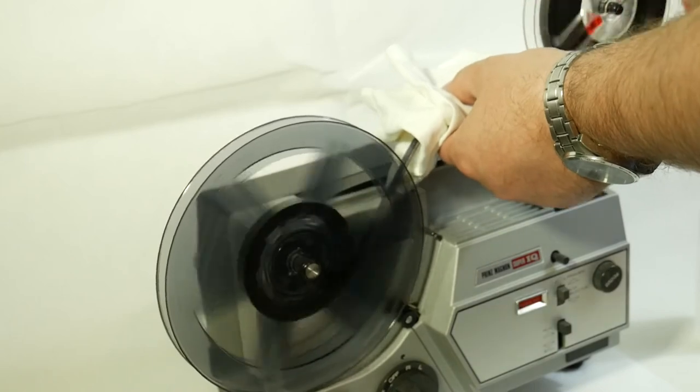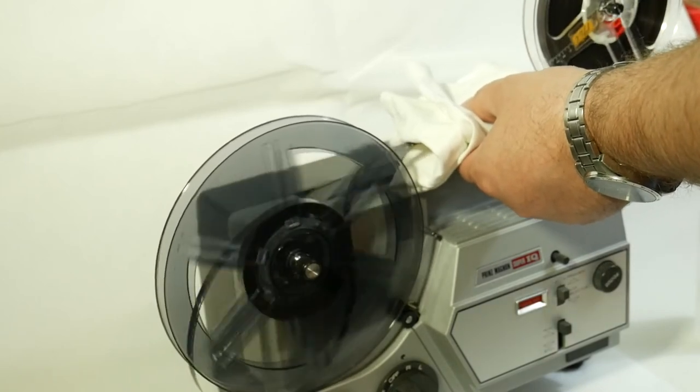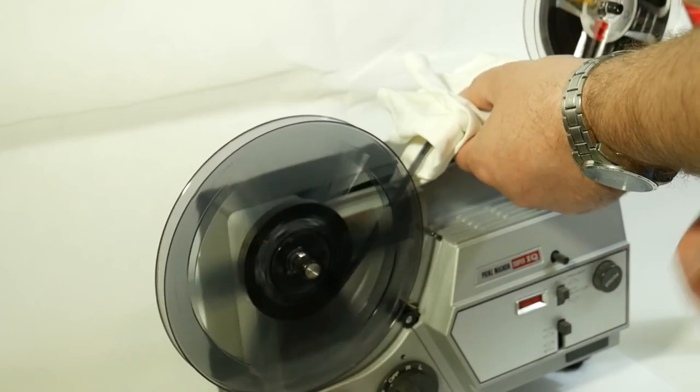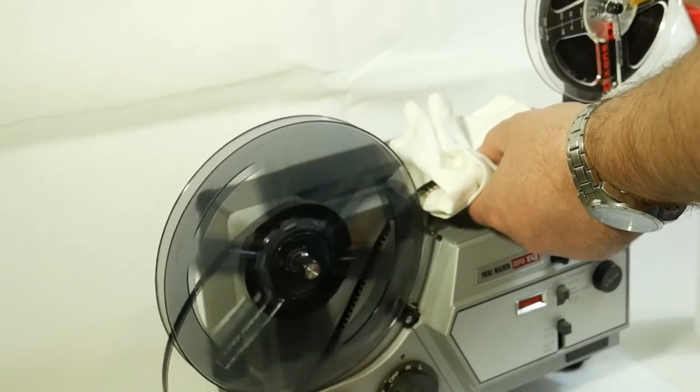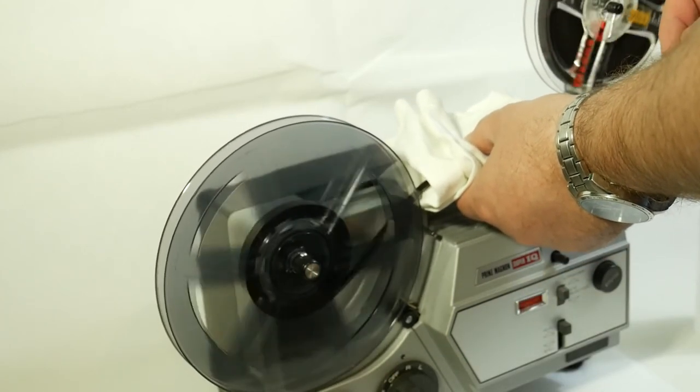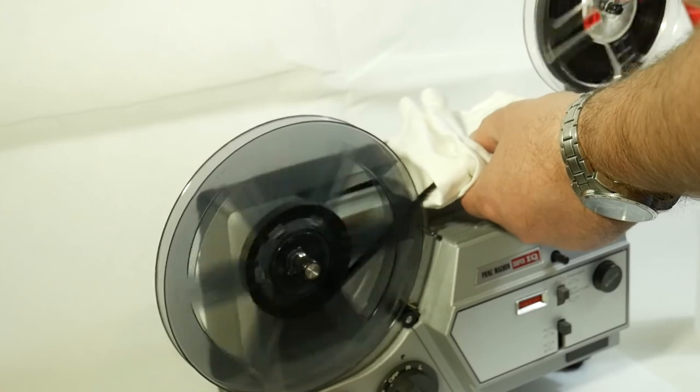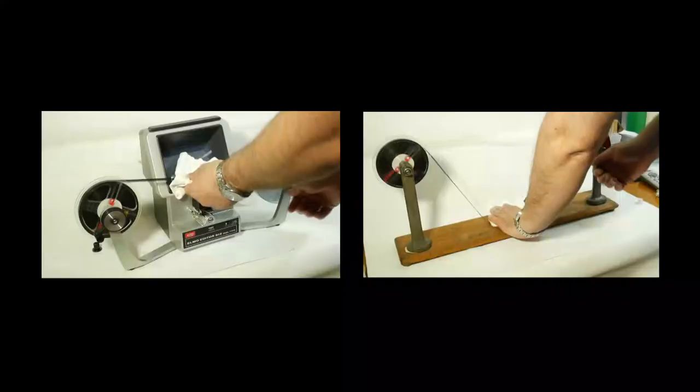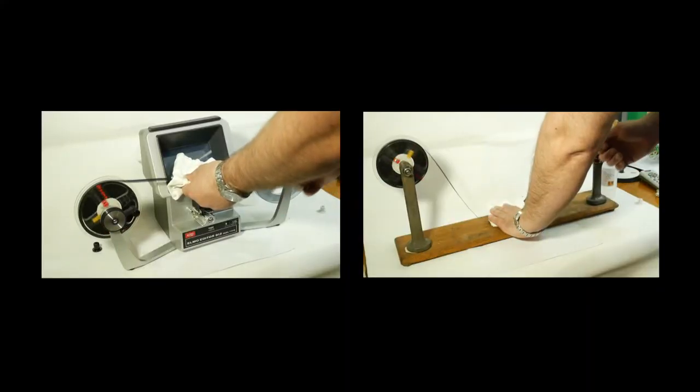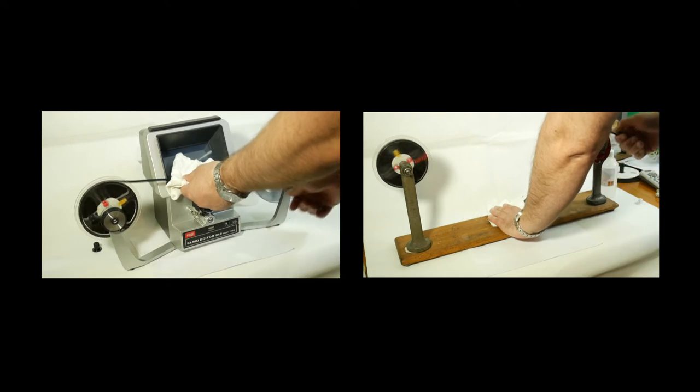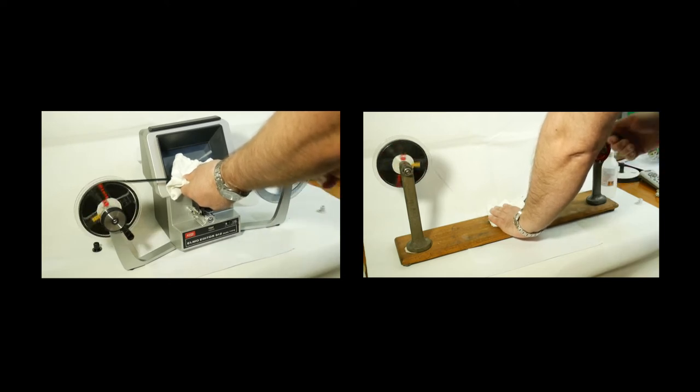You can also use a movie projector to clean your film by rewinding the film. This however does put some strain on the motor of the projector depending on how large the projector is. It is a way of cleaning the film, but using an editor or a pair of rewind arms is a much better option.